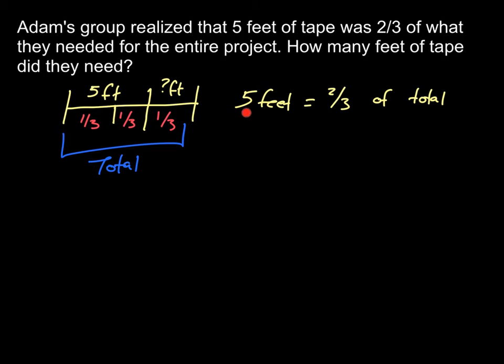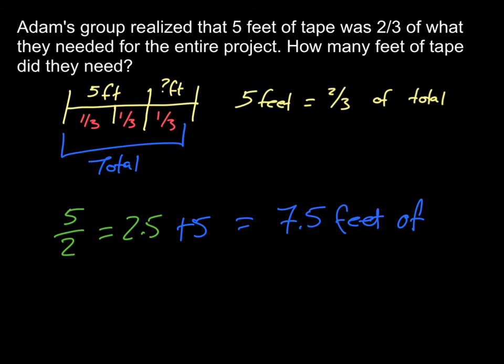What we're really saying with this problem is 5 feet is 2/3 of the total amount that we need. So we need to isolate it a little bit and figure out what 1/3 is to give us our last third. We can do 5 divided by 2 so that we can figure out what 1/3 is, which gives us 2 1/2. And if we already know that this total amount here is 5, we can just add that 2 1/2 feet to the 5 that we already have, which will give us 7 1/2 feet of tape for his entire group for their entire project.